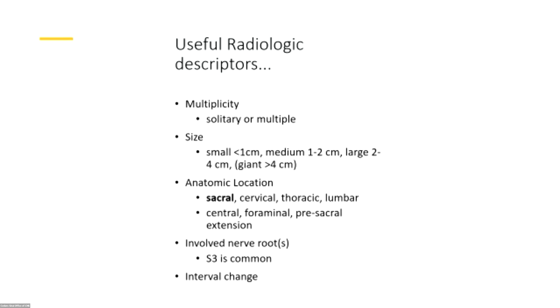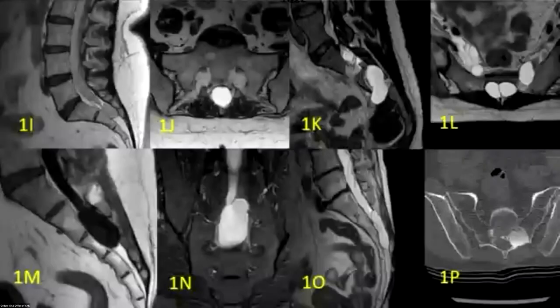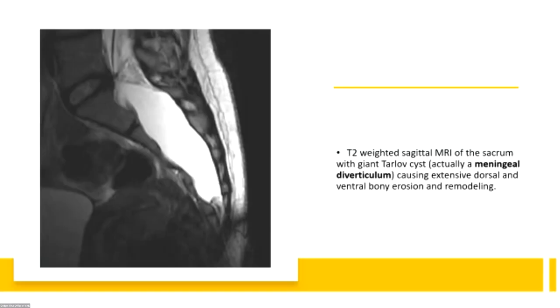Is there any interval change in these over time? These are all surgical cases from probably the past couple of years, but this just shows you some of the variety of these cysts that you'll see. It would probably be helpful to have additional classification for these types. Here's a giant one — this is actually a meningeal diverticulum, but the surgical approach is the same, with extensive remodeling both dorsally and ventrally.